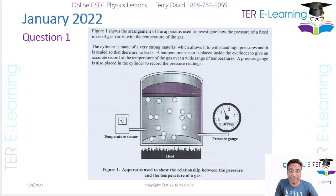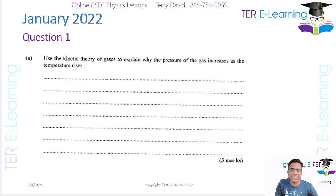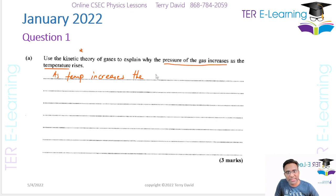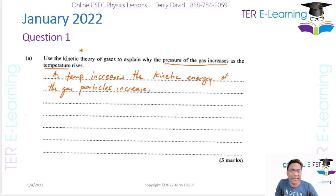We have something to measure temperature and something to measure pressure. The first part of this question says: use the kinetic theory of gases to explain why the pressure of the gas increases as temperature increases. This is a typical examination question. The key thing we need to answer is that pressure increases with temperature. So as temperature increases, the kinetic energy of the gas particles increases.